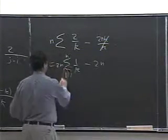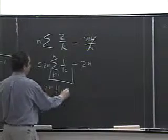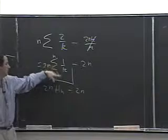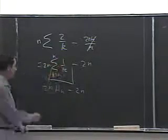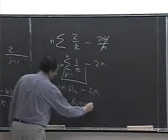Yeah, this is the harmonic series. This is H of n. So 2n H(n) minus 2n. But the harmonic series is about the natural log of n, so 2n natural log of n minus 2n.